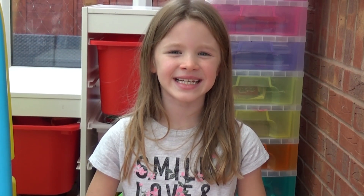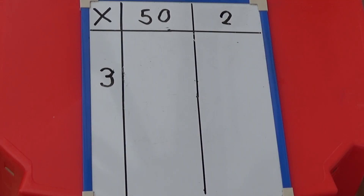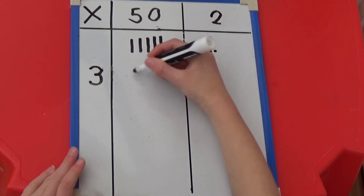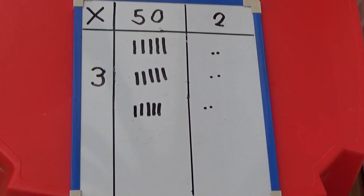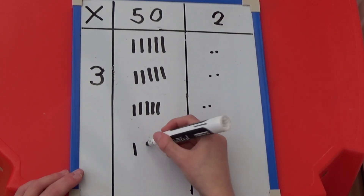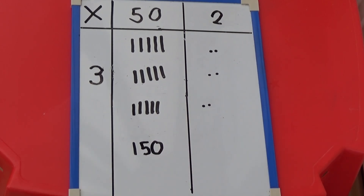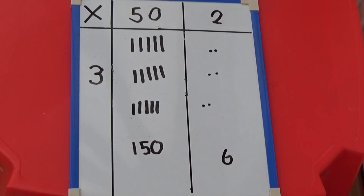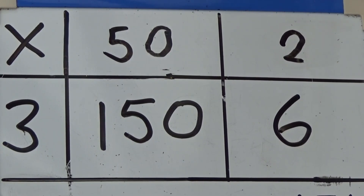Once we can do this using Deans we can record it as a picture. I've drawn out the grid and partitioned 52 into tens and ones and put the 3 underneath again. This time I'm going to draw out 5 tens and 2 ones 3 times. Again we can see 50 multiplied by 3 is 150 and 2 multiplied by 3 is 6, so 52 multiplied by 3 is 156.